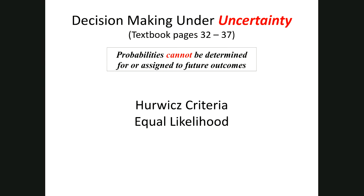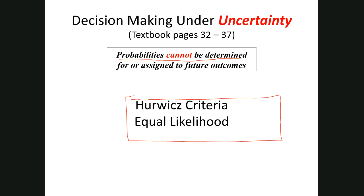In this part of the lesson, we're going to continue talking about decision making under uncertainty. This is the condition that exists when probabilities can't be determined for the assigned future outcomes. Today we're going to look at two additional criteria. Last time we looked at the pessimistic, the optimistic, and the regret criteria. Today we're going to look at the criteria developed by a scientist named Hurwitz, and then equally equal likelihood, which is the lowest level of information possible.